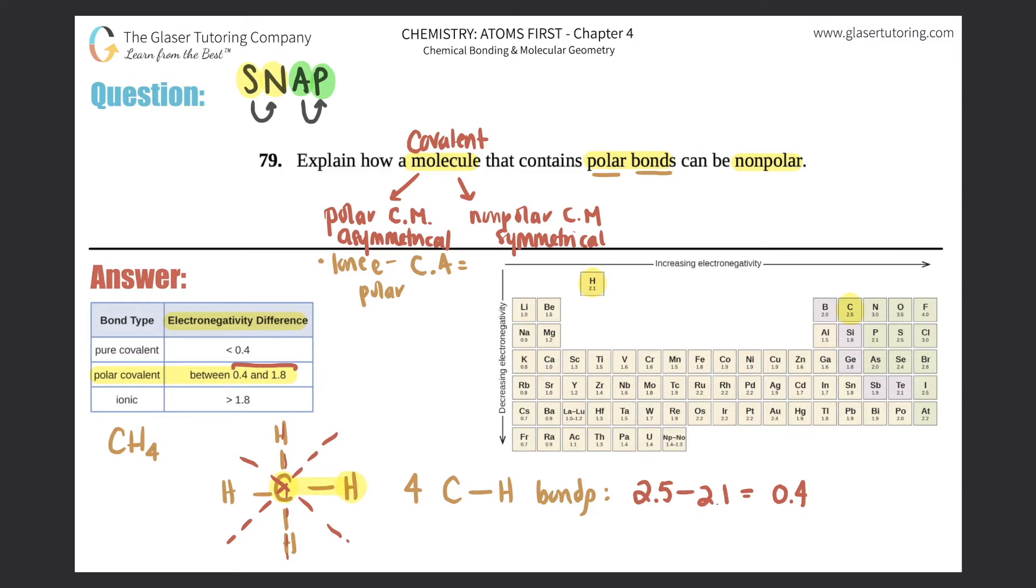Now, in a lot of other textbooks, they actually say that C-H bonds are actually nonpolar. So I would just have to say, check with your teacher on that one. Even though the math that they're supplying you guys with this textbook, it says that it's polar. So technically, I mean, this would be one example of having a nonpolar compound but having polar bonds. Let me give you another example.